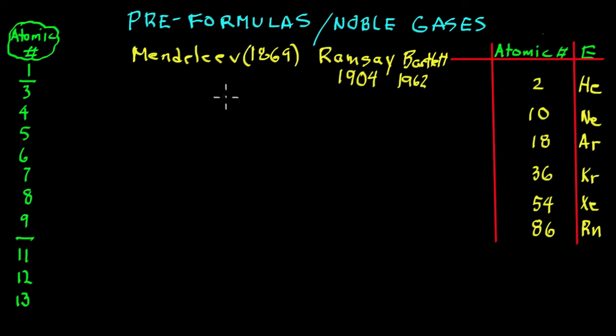So let's see where this is going. Over here I have the noble gases: helium, neon, argon, krypton, xenon, and radon. Radon is radioactive. This is the atomic number, the number of protons in each atom: 2, 10, 18, 36, 54, and 86.